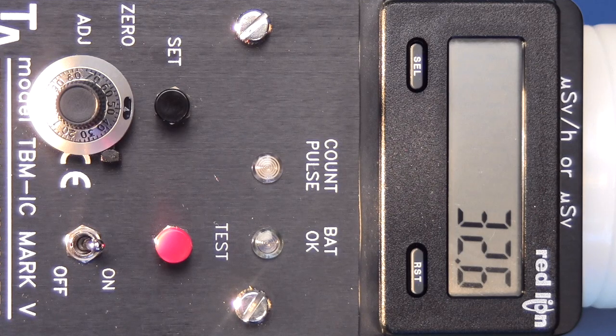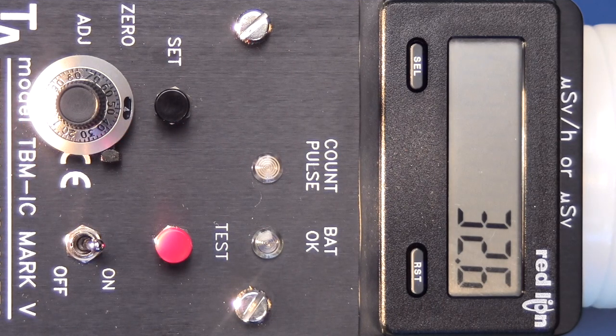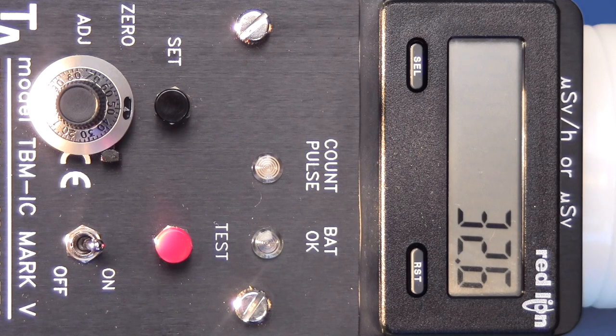Let's have a look at the other controls and indicators. This LED light flashes green in pulses as the count rate increases. It flashes red for overrange.